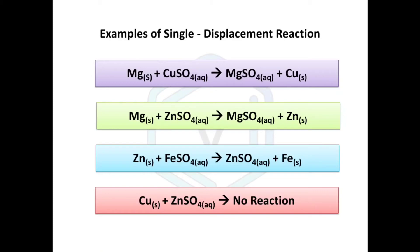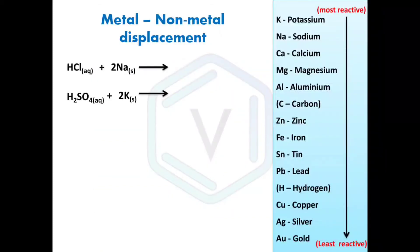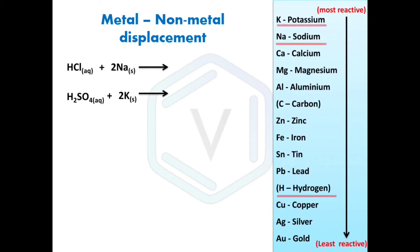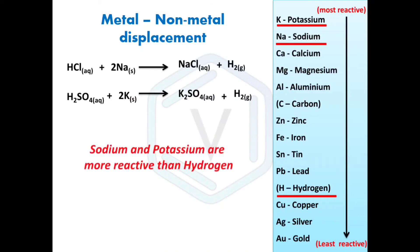Now let's discuss metal–non-metal displacement reactions. In the first example, hydrochloric acid reacts with sodium; in the second, sulfuric acid (H₂SO₄) reacts with potassium. Looking at the reactivity series, potassium and sodium are highly reactive compared to hydrogen, so both metals replace hydrogen from their respective acids, giving sodium chloride plus H₂, and potassium sulfate plus H₂.